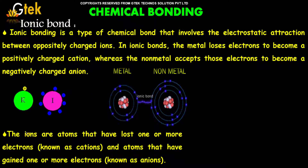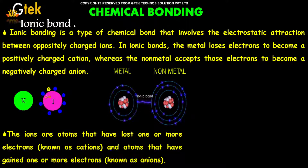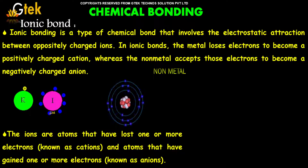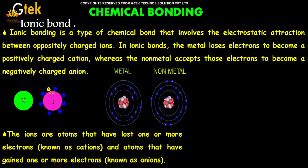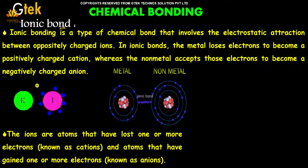Ions are atoms that have lost one or more electrons — these are cations — and atoms that have gained one or more electrons are anions. Together they form the ionic bond.